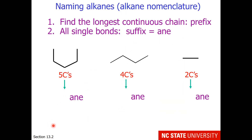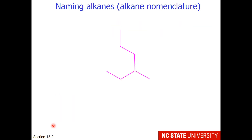So back to these compounds: this 5-carbon alkane would be pentane, 4 carbons would be butane, and 2 carbons would be ethane. But what if there's branching?